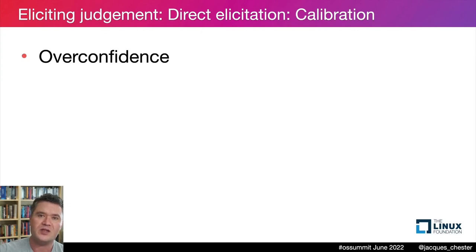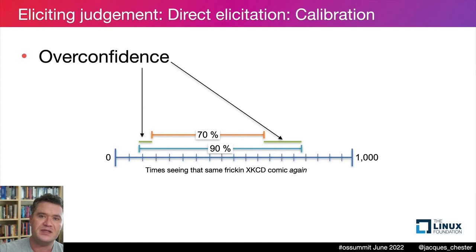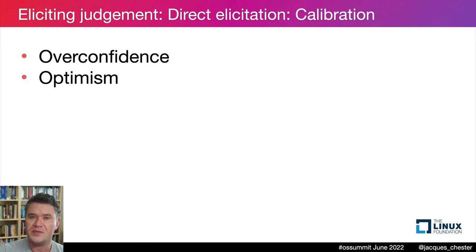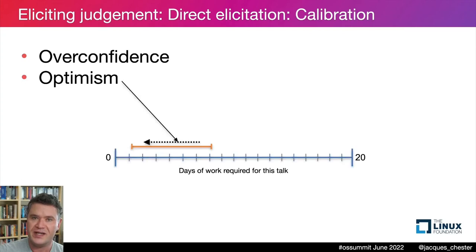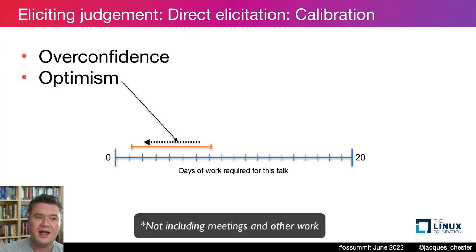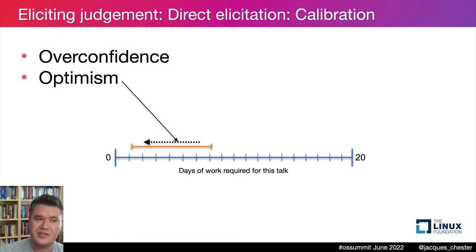Studies show that unless trained, estimators are almost always overconfident — even when coached to give 90% confidence intervals, they give 70% confidence intervals, meaning 30% of true values fall outside the range they provided. Optimism is different: it's rarer, mirrored by pessimism, where the entire estimate is skewed towards one end of possible values. Suppose I estimate how long it will take to prepare this talk and it actually took about three weeks of full-time effort: estimating one week ± two days is optimistic; five weeks ± two days is pessimistic.